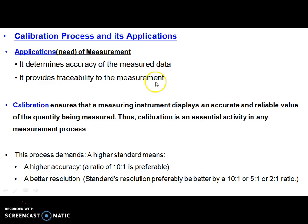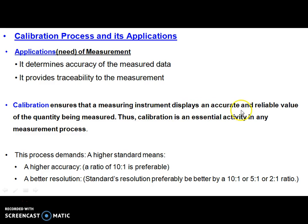The applications of the calibration process could be concluded from its definition: first, determination of accuracy of the measured data with the help of an instrument; and second, very importantly, establishing the traceability of the measurement process using the instrument under consideration. This calibration process ensures the measuring instrument displays an accurate and reliable reading. Calibration is an essential activity of the measurement process.